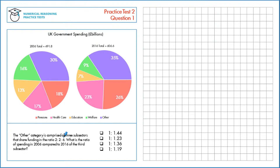So first let's look at this ratio here. We can simplify it by dividing through by 2 to get the ratio 1 to 1 to 3.